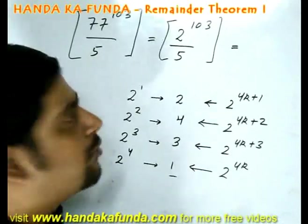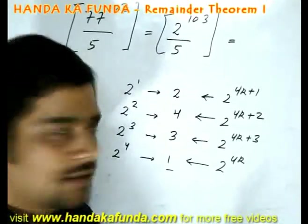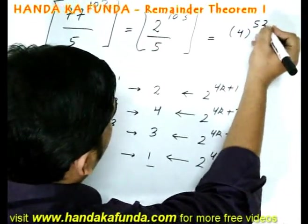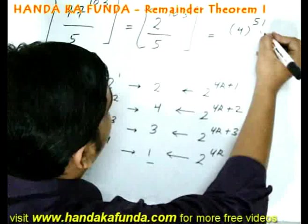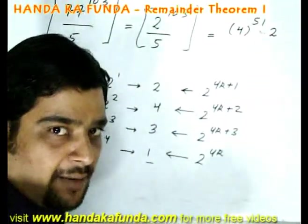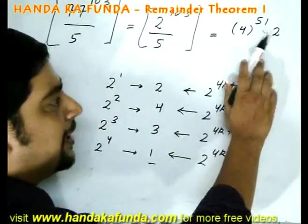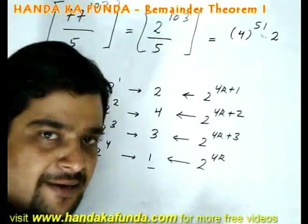So I can very well write this as 4 to the power of 51 into 2. Think about it for a while. 4 to the power of 51 is 2 to the power of 102 into 2, which means 2 to the power of 103.